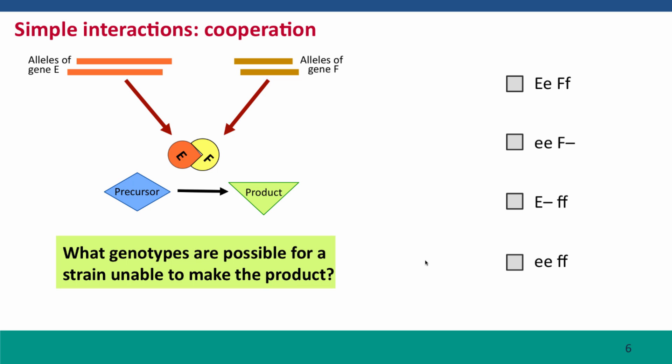So what genotypes would be possible for a strain that couldn't make the product? This time, there's three different answers, because it could be the case that the strain was defective in producing protein E. So if it was knocked out for both alleles of gene E, you would not make the functional protein dimer that carries out the reaction, and the reaction wouldn't happen. Or you could be defective for both alleles of gene F, because if you're not making subunit F, the reaction isn't going to happen, there'll be no product. Finally, you could be defective for both genes, and then you make neither of the subunits, and again, make no product.